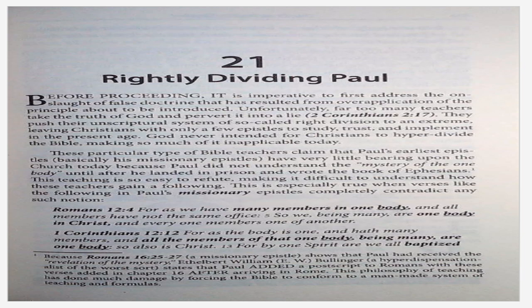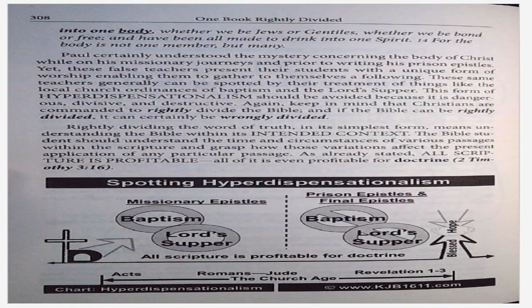This is especially true when verses like the following in Paul's missionary epistles completely contradict any such notion. Romans 12:4 — For as we have many members in one body, and all members have not the same office, so we, being many, are one body in Christ, and everyone members one of another. 1 Corinthians 12:12 — For as the body is one, and hath many members, and all the members of that one body, being many, are one body, so also is Christ. For by one Spirit we are all baptized into one body, whether we be Jews or Gentiles, whether we be bond or free, and have been made all to drink into one Spirit. For the body is not one member, but many. Paul certainly understood the mystery concerning the body of Christ while on his missionary journeys and prior to writing his prison epistles.